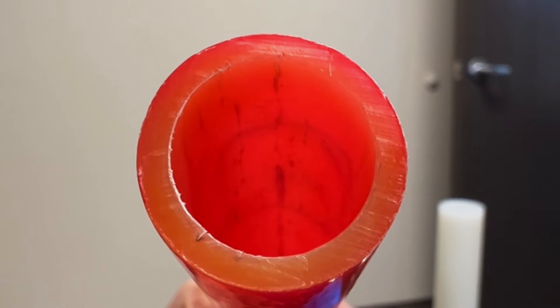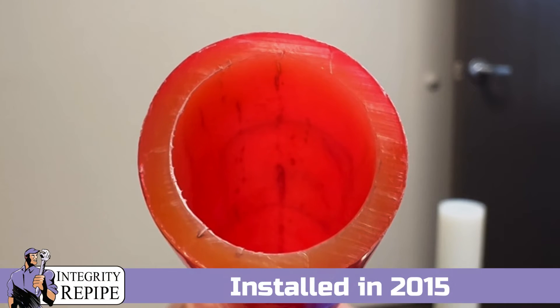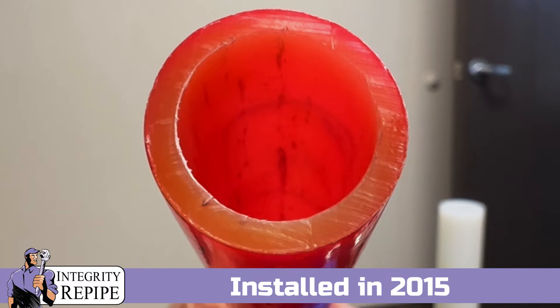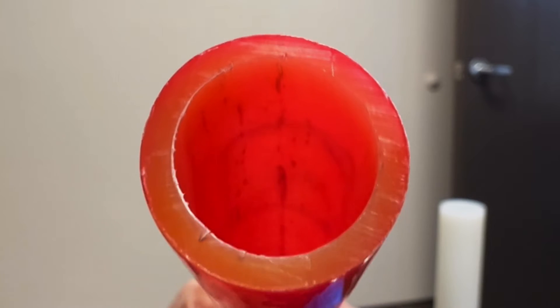As you can see from this pipe that I installed in 2015, those little black fractures are all over the inside of the pipe. In fact, you can see fractures right here at the end of the pipe.